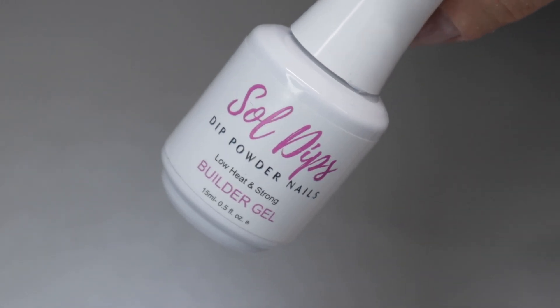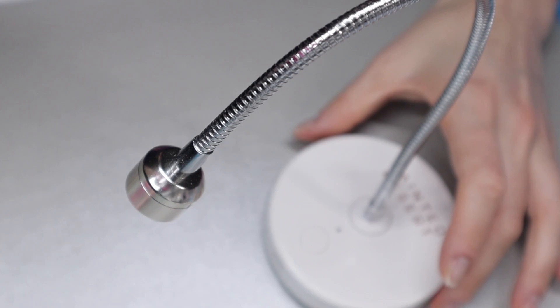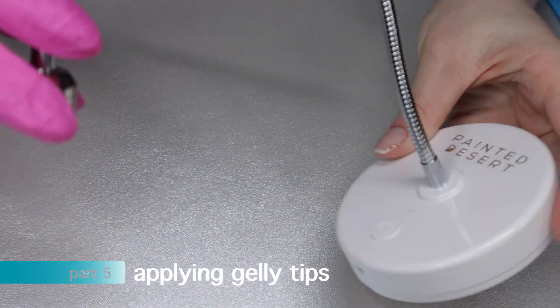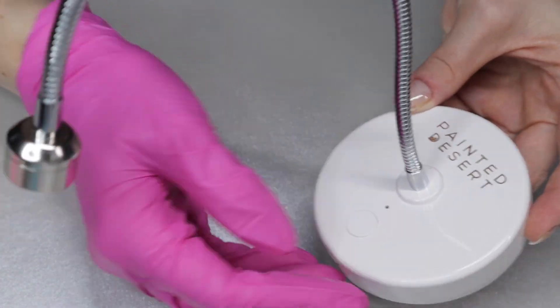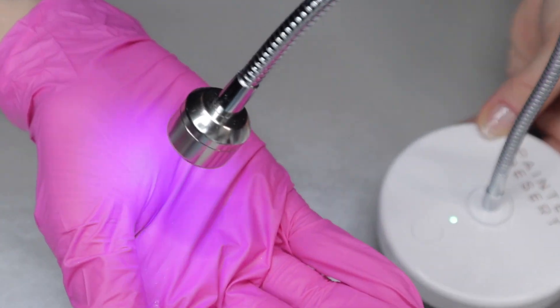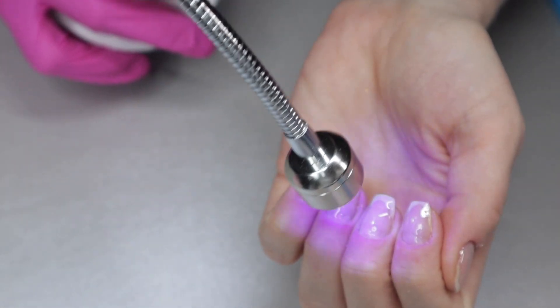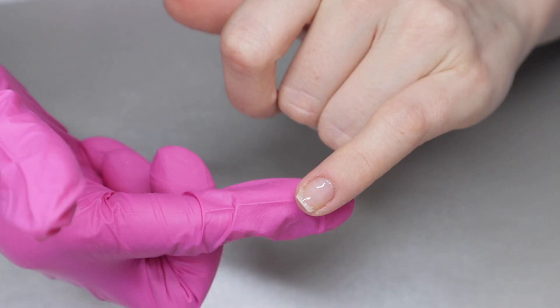I applied a thin layer of this builder gel and cured that for 60 seconds as well. The flash curing lamp I will be using is this one right here by the Painted Desert. It is a standalone gooseneck lamp that is charged using a cord, however it can be used cordless.